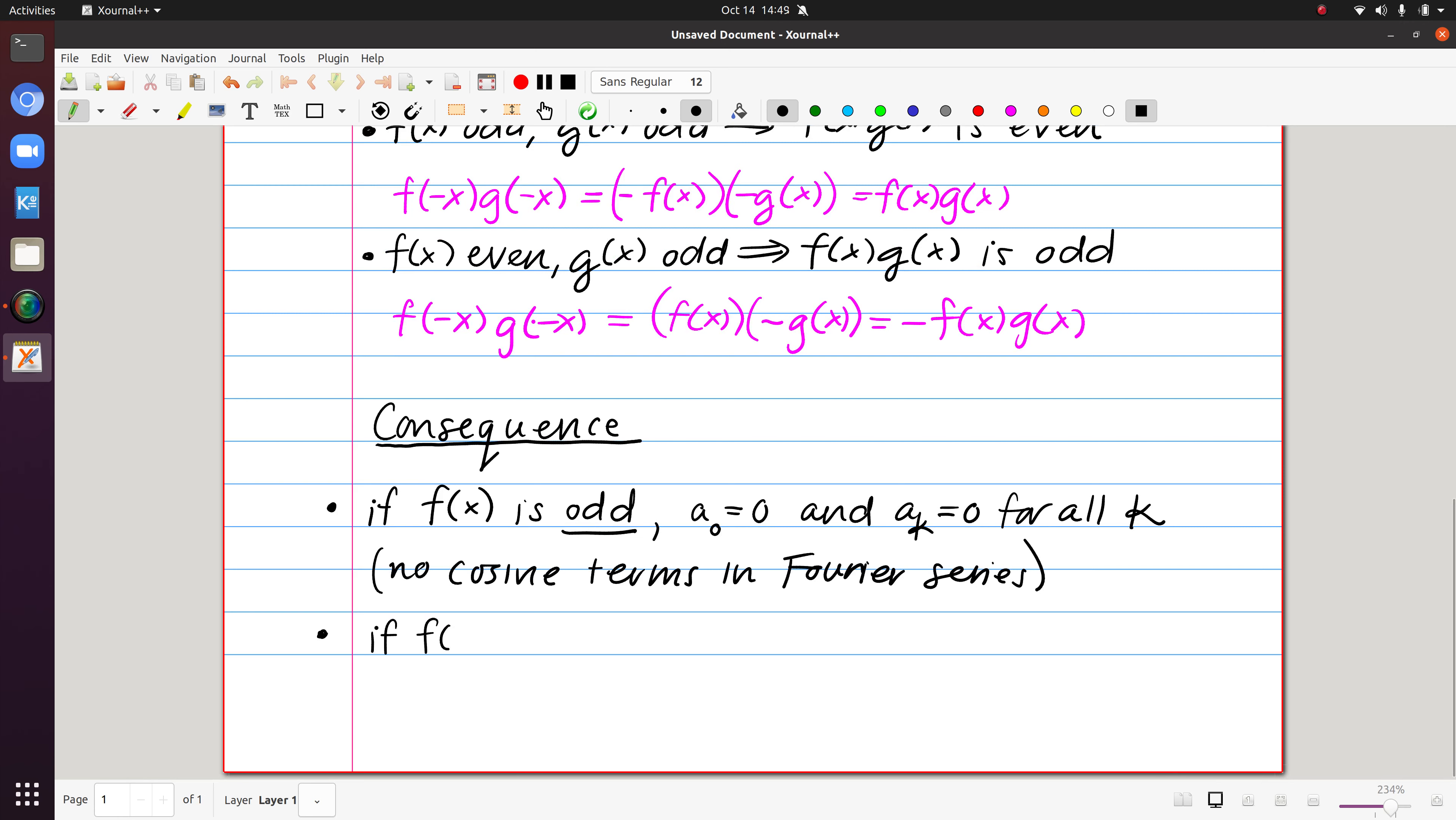If instead we know that f of x is an even function, that would mean that b sub k is 0 for all k. And this means that there are no sine terms in the Fourier series.